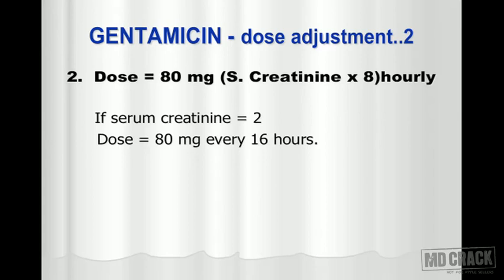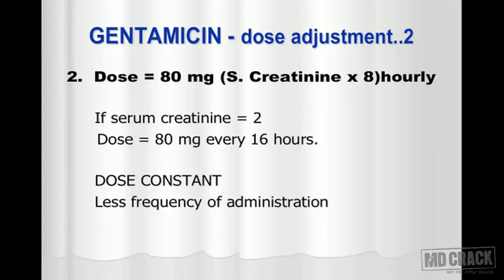Normally gentamicin is given every 8 hours, because we consider normal serum creatinine as 1 — so 1 multiplied by 8 equals 8. The usual dose is 80 milligrams every 8 hours. Now if serum creatinine is 2, then 2 multiplied by 8 equals 16, so you give 80 milligrams every 16 hours. You space out the dosing to minimize the chances of renal toxicity.